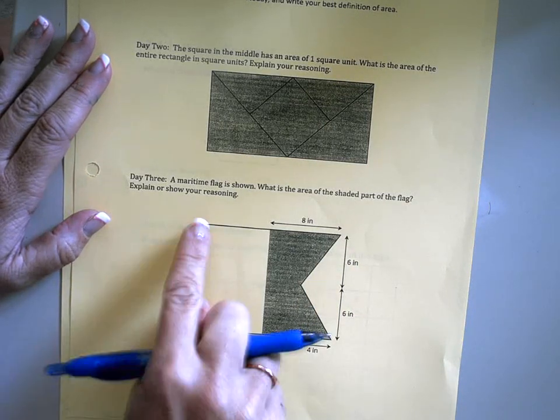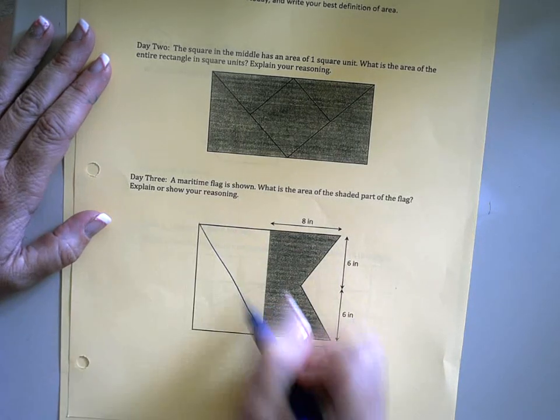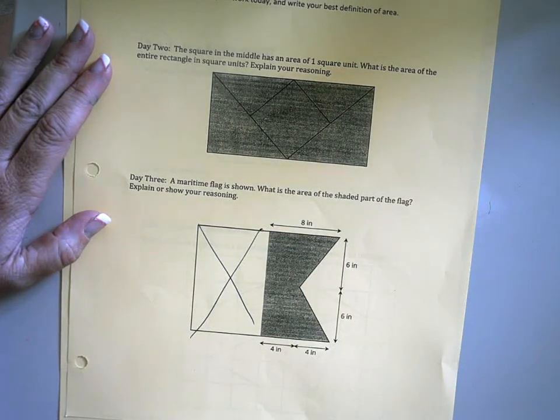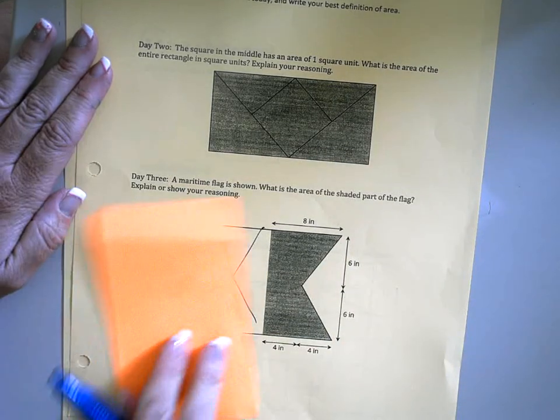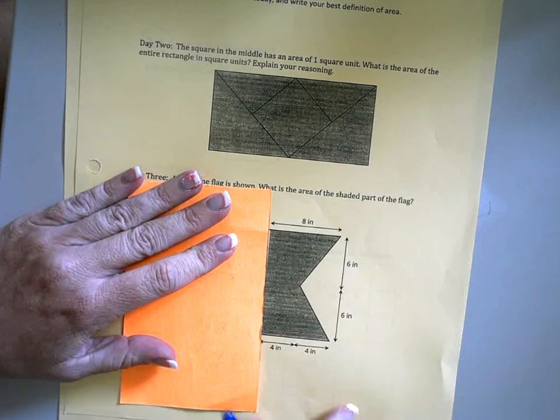So the first thing I notice is that none of this is shaded, so I'm just gonna get rid of it completely. I'm not even gonna look at it anymore. In fact, I'm gonna take my index card and just cover it up. So now we have this shaded region.